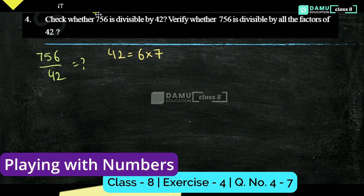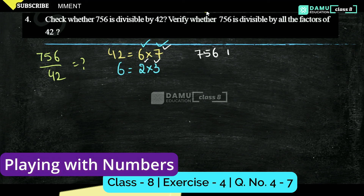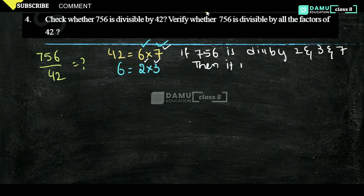So we should check with 6 and 7. And 6 can be written in the format of 2 into 3. So finally, we have to check three conditions: divisibility by 2, 3, and 7. If these three divisibility rules are satisfied, then we can confirm 756 is divisible by 42. In order for 756 to be divisible by 42, it must be divisible by 2, 3, and 7.